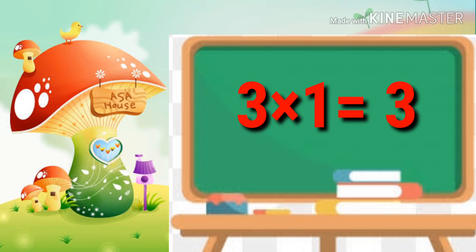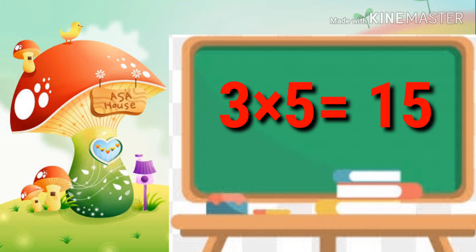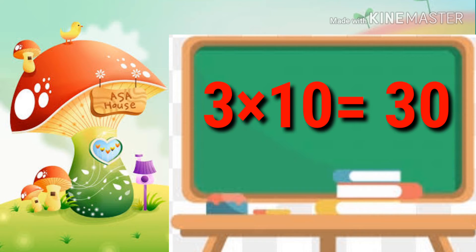3 1's are 3, 3 2's are 6, 3 3's are 9, 3 4's are 12, 3 5's are 15, 3 6's are 18, 3 7's are 21, 3 8's are 24, 3 9's are 27, 3 10's are 30.